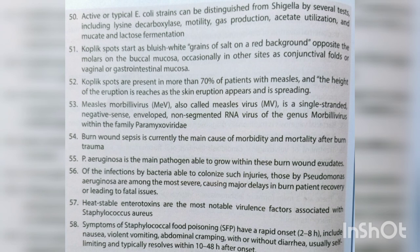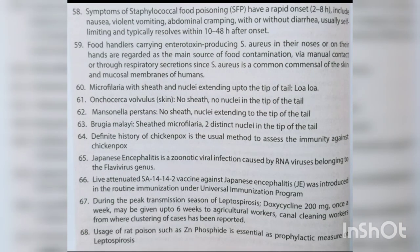Heat-stable enterotoxins are the most notable virulence factors associated with Staph aureus. Symptoms of staphylococcal food poisoning have a rapid onset of 2-8 hours and include nausea, violent vomiting, and abdominal cramping with or without diarrhea; it is usually self-limiting and resolves within 10-48 hours. Food handlers carrying enterotoxin-producing Staph aureus in their noses or on their hands are regarded as the main source of food contamination, since Staph aureus is a common colonizer of the skin and mucosal membranes.